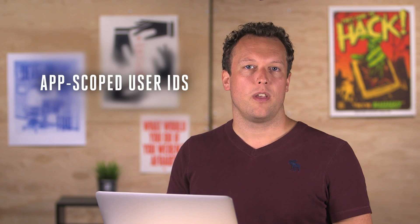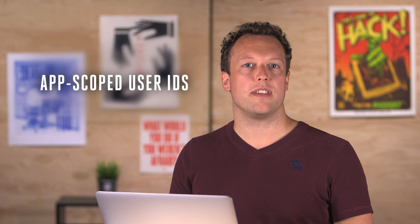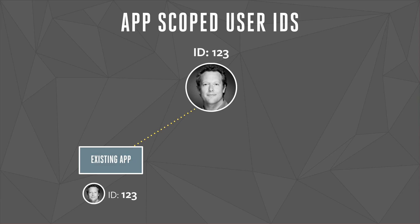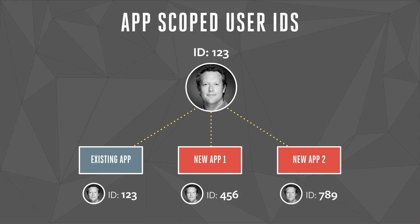The last change I wanted to cover was App-Scoped User IDs. We introduced App-Scoped User IDs to help protect people's information. Here's how they work. Previously, when someone logged into your app, that person was referred to by their original Facebook user ID — in this example, 123. But going forward, when a person first logs into any app using the new Facebook login, they'll be known instead by a user ID scoped to that app. This means that the ID by which a person is known is stable within an app, but is different between applications — in this example, 456 and 789.